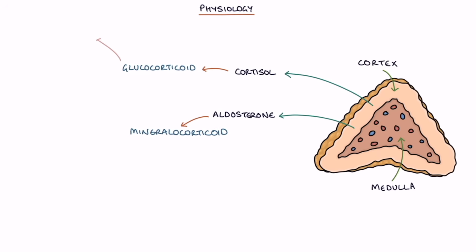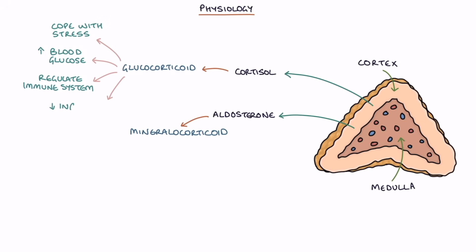Glucocorticoids like cortisol help the body to cope with stress, increase and regulate the blood glucose level, and reduce inflammation. If there is not enough cortisol, the blood glucose level will fall, causing hypoglycemia or a low glucose level. The effect on the glucose level is why cortisol is called a glucocorticoid.